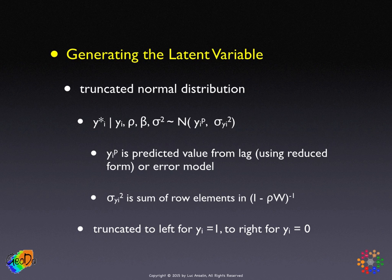Unlike the approach in Baran and Weiberberg, where we work with the joint multivariate likelihood for the probit model as is, in the Bayesian approach by LeSage we work with the likelihood — actually the joint distributions — from the standard continuous dependent variable lag and error models. This is very much in the same spirit as the EM approach.